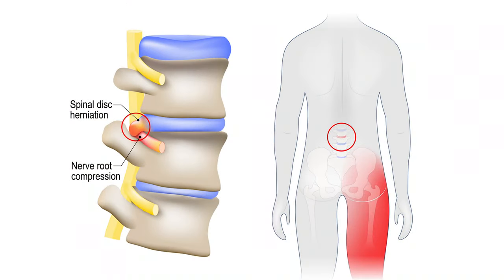Some individuals also describe paresthesia, or numbness and tingling, in the same pattern. The pain can vary from sharp and stabbing to dull and aching, and generally presents only on one side rather than on both legs.